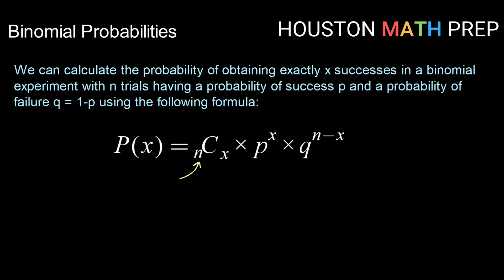n choose x is a combination. We have a formula for that: n factorial divided by (n minus x) factorial times x factorial. You can also do n choose x pretty simply in a calculator.